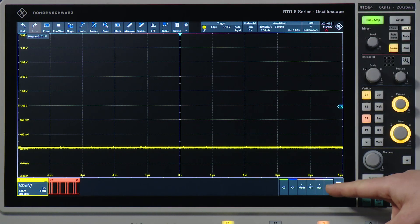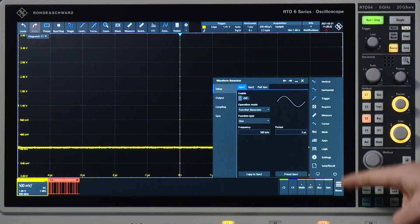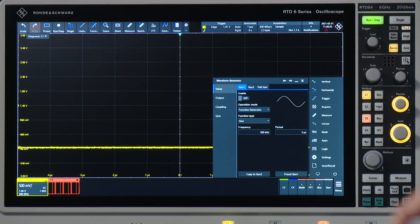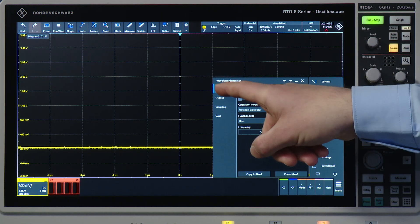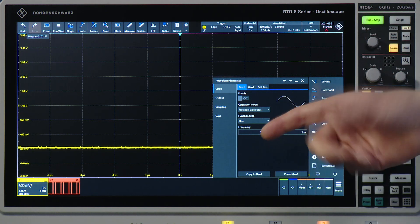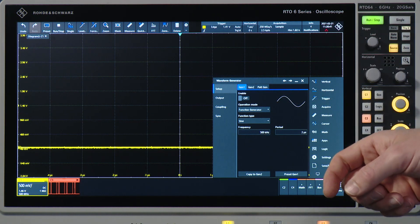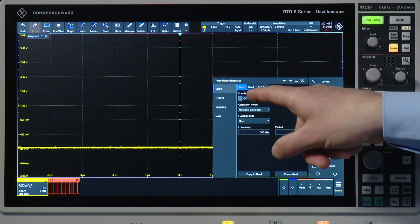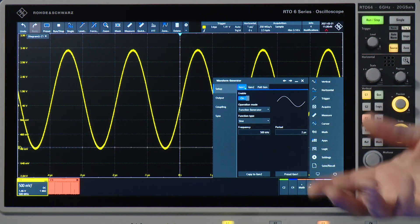To start it you press the generator button in the signal activator menu down here and you see setup generator one. It's the setting for the output one of the generator. If you enable it you will see I already have a sine function here.